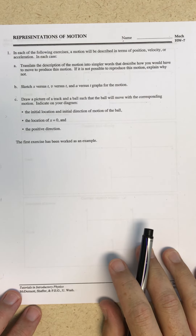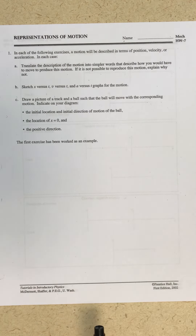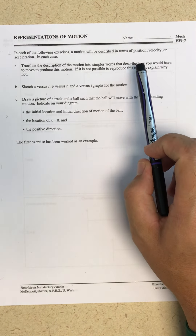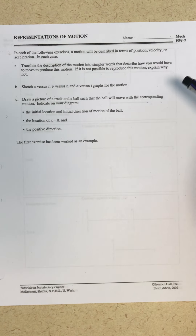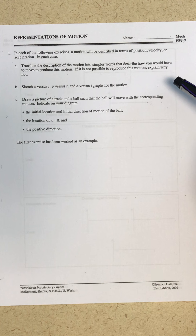A little tutorial here on understanding motions and connecting different ways of representing motion, at least in the context of physics. We're going to have a series of exercises. A motion will be described in terms of position, velocity, or acceleration. In each case, you're going to translate the description of the motion into simpler words that describe how you would have to move to produce this motion. If it is not possible to reproduce this motion, explain why not.